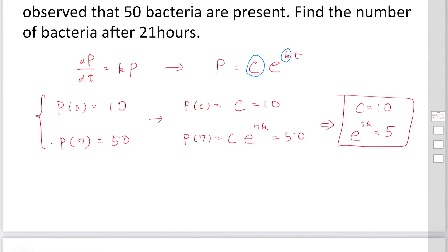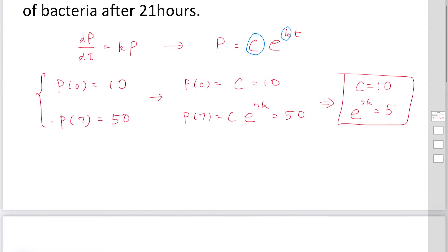Then find the number of bacteria after 21 hours. So P(21) we'd like to find. You can substitute t equals 21: C exponential 21k.